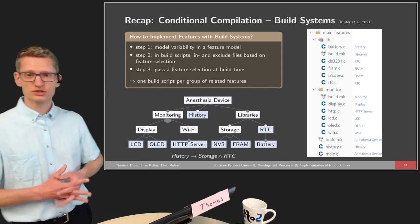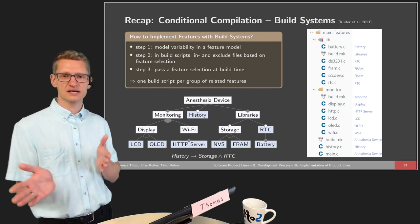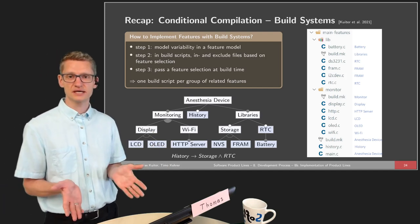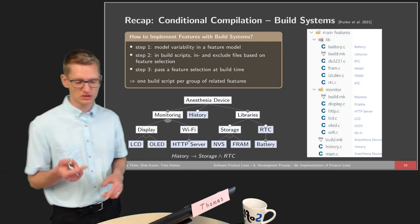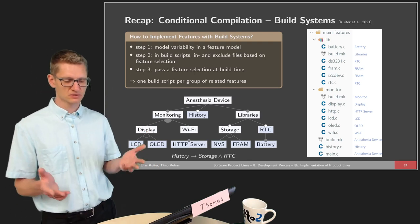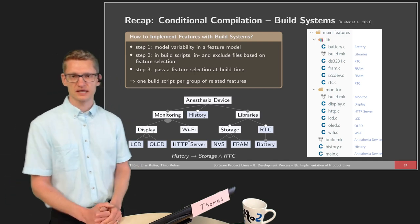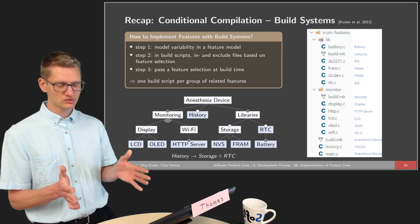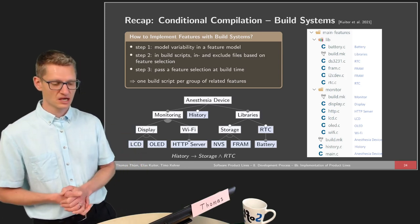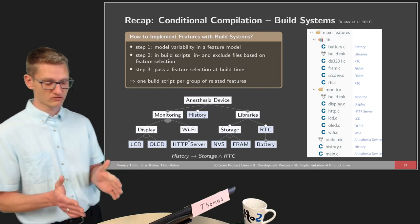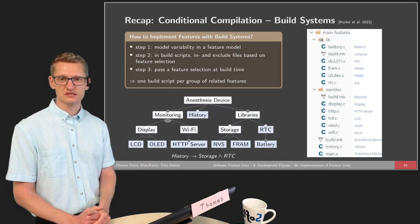Then we looked at conditional compilation, which was the first technique beyond those ad-hoc approaches. Conditional compilation has the basic strategy that we model variability in a feature model and build scripts to include and exclude files based on our feature selection. We pass this feature selection at build time. This is not to be confused with how build systems were used for clone and own — here build systems are used specifically for conditional compilation. We have one build script per group of related features.